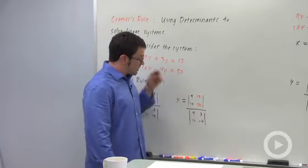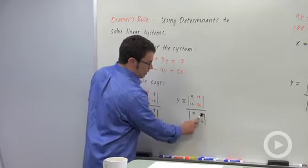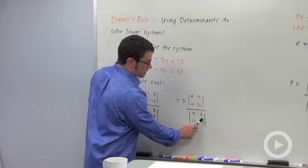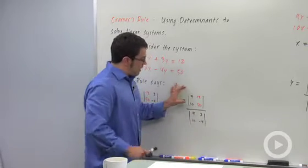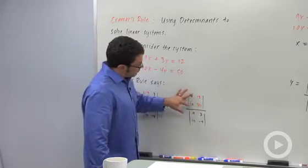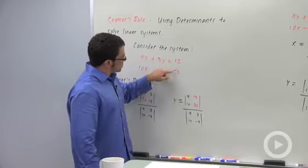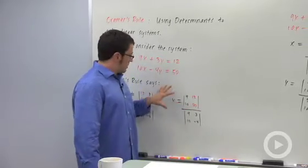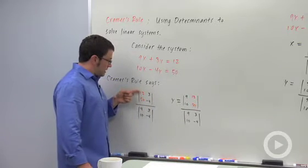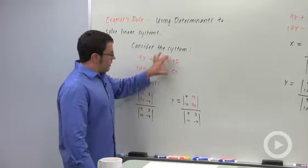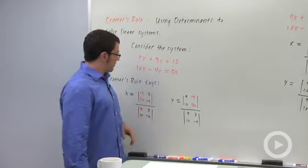You get y very similarly. Again, in the denominator, you've got the determinant of the coefficient matrix, and in the numerator, you've taken the coefficient matrix and replaced the y terms with 12 and 50, so it's very similar how you calculate these. Just remember, replace the appropriate column with the constants, in this case 12 and 50.